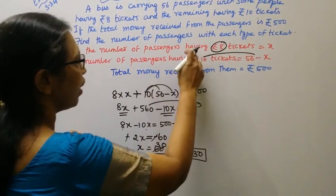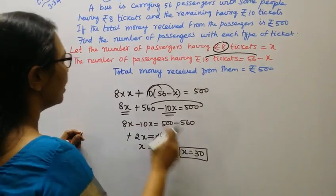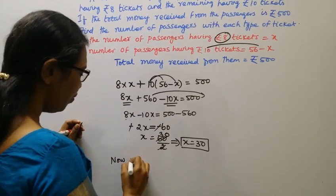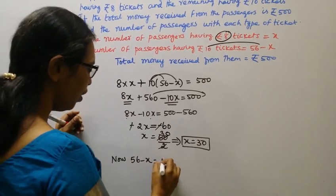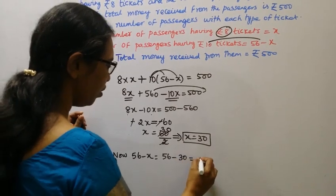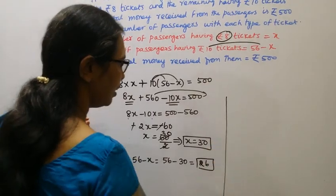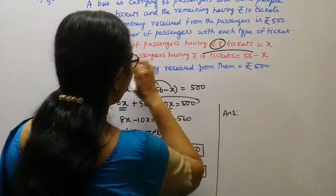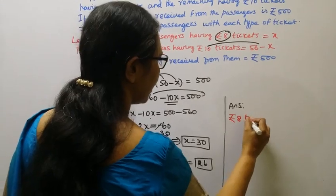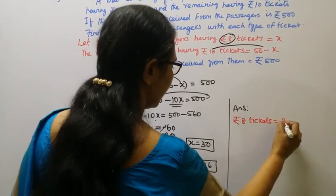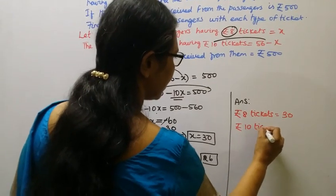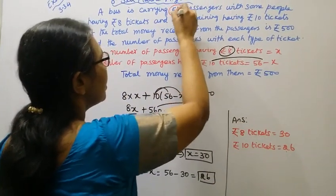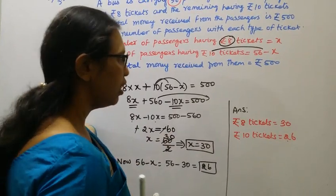The number of passengers having Rs. 8 tickets is 30. The number of passengers having Rs. 10 tickets is 56 minus 30, which equals 26. Verification: 30 plus 26 equals 56, which is correct.